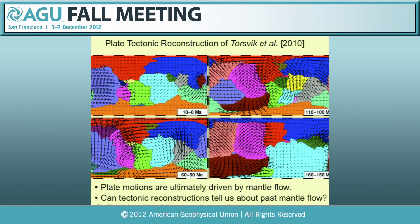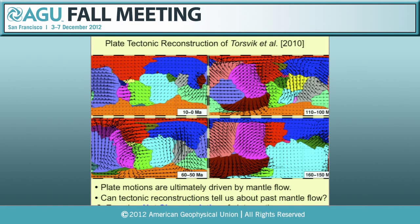Because plate tectonics is ultimately driven by the mantle flow beneath it, in principle we should be able to learn something about mantle flow from the patterns of plate motions in the past that we can observe from tectonic reconstructions. This is a picture of tectonic reconstructions from Torsvik et al. 2010. Going back in time, there are interesting patterns of different shapes, sizes, and geometries of plates moving in different directions. To do that analysis, I'm going to talk about the net characteristics of plate tectonics.